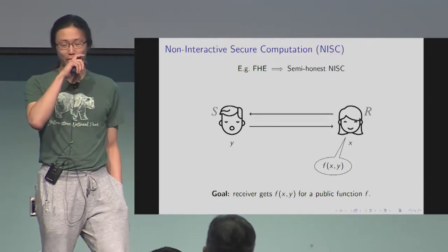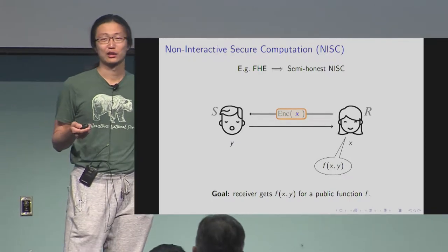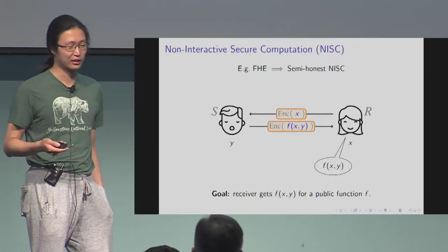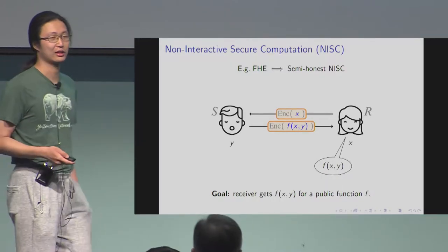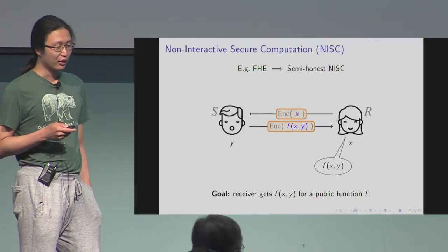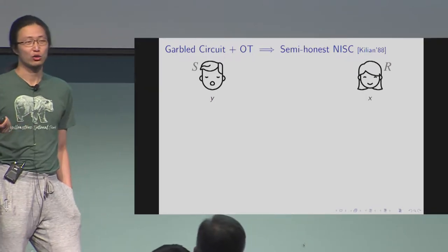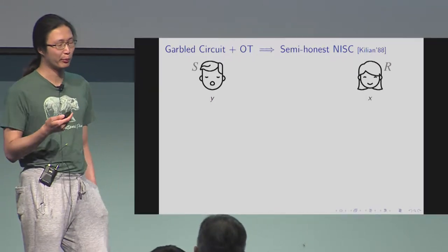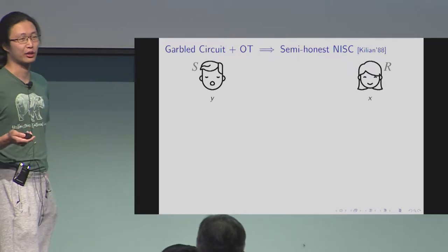For example, if you have fully homomorphic encryption, you can let the receiver send an encryption of her data, and the sender locally evaluates and sends the encryption back. But homomorphic encryption is quite inefficient, so in the more practical approach, we use garbled circuit and OT.